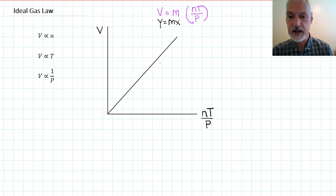Now, the slope of this line, the rise over the run, is given a special name in gas chemistry, and it's called R, the universal gas constant, which is essentially the slope of this line.